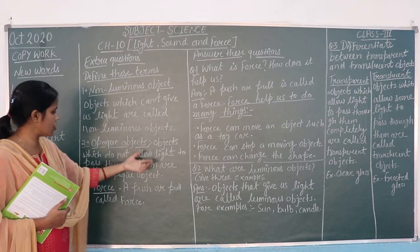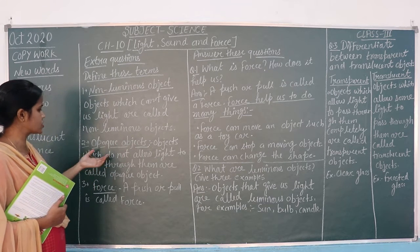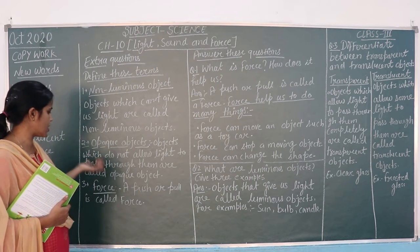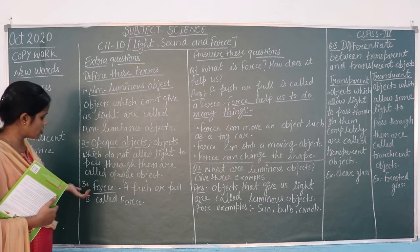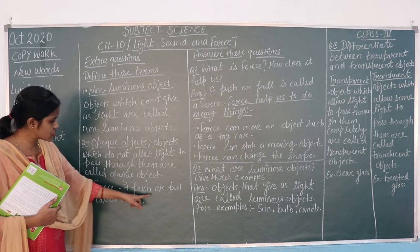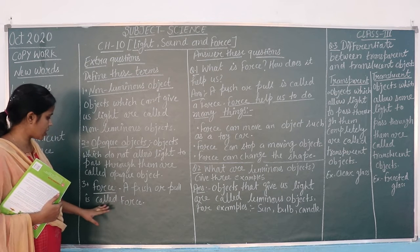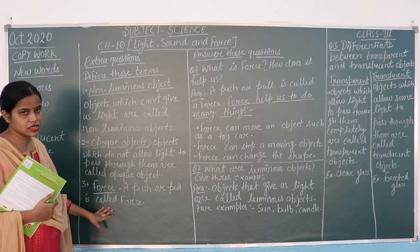Objects which do not allow light to pass through them are opaque objects. Force: force is a push or pull.